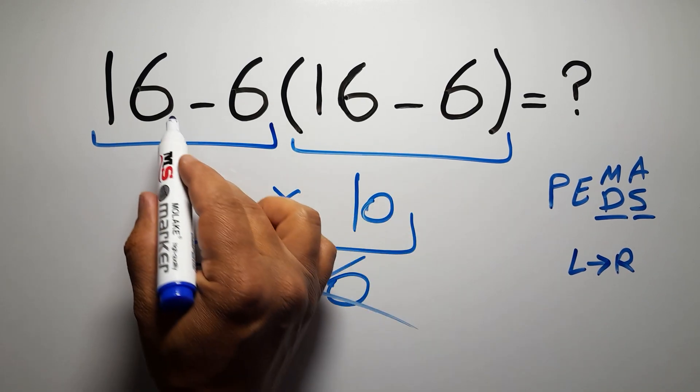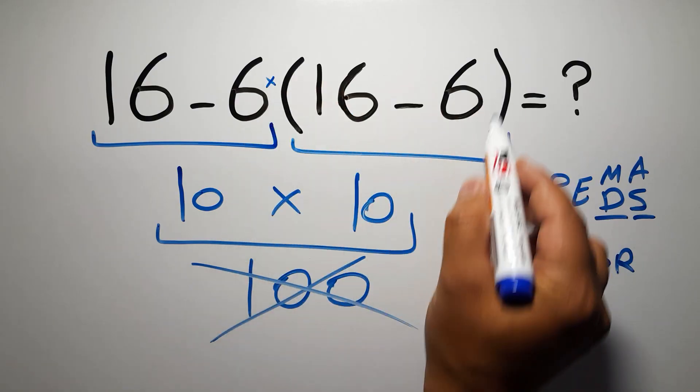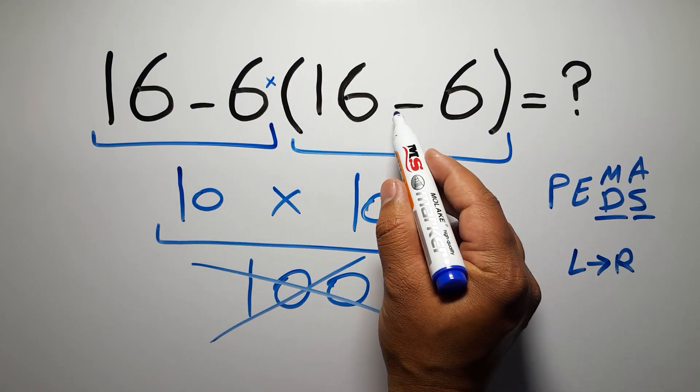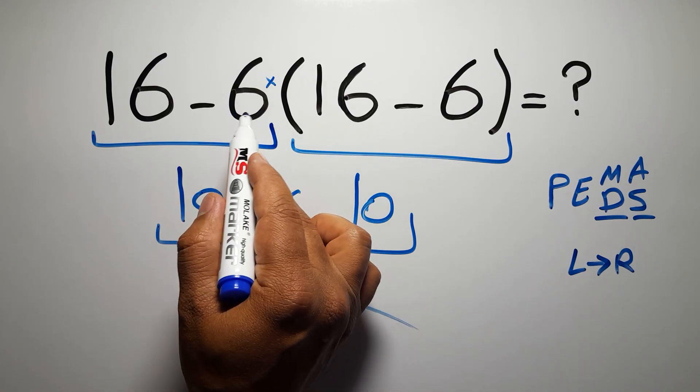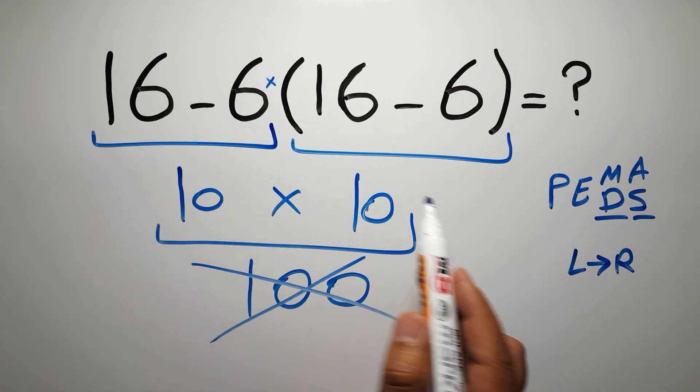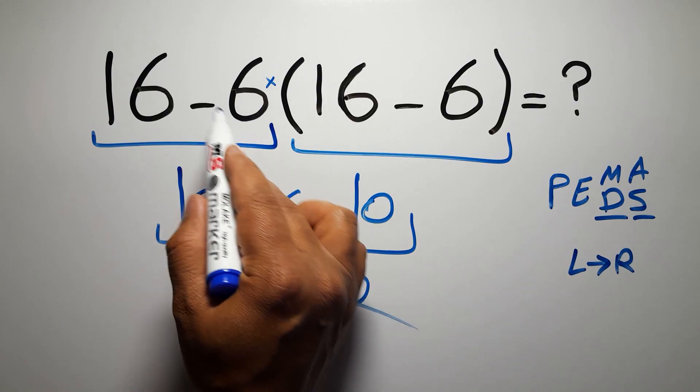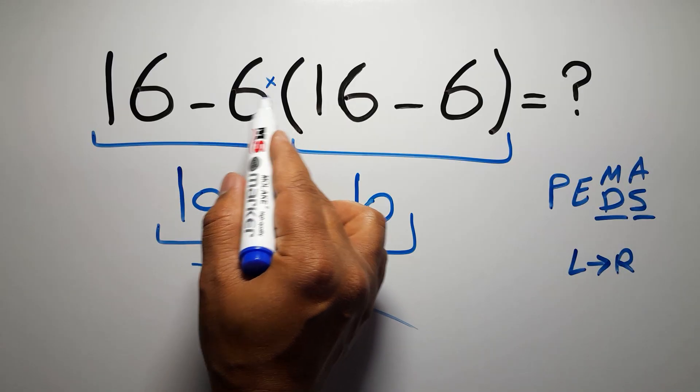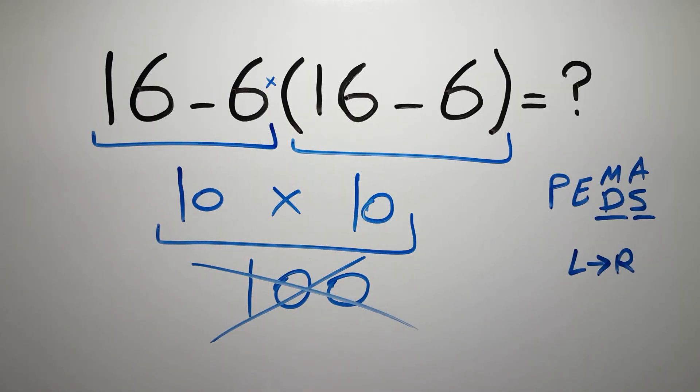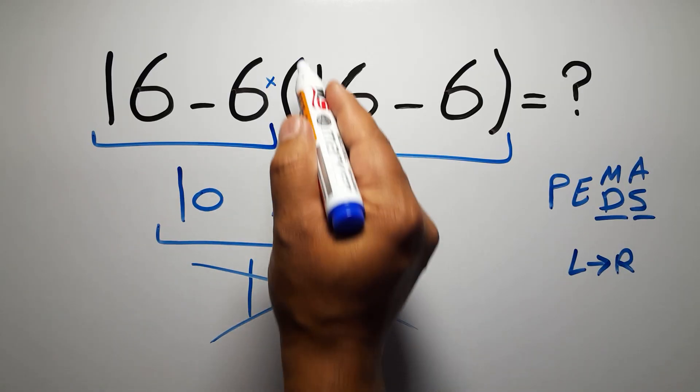In this expression we have one subtraction, one multiplication, and one parentheses. Inside this parentheses we have one subtraction. We need to pay attention that here we have a multiplication because in mathematics when a number is placed next to parentheses it means multiplication, and we usually don't write the multiplication sign for brevity.